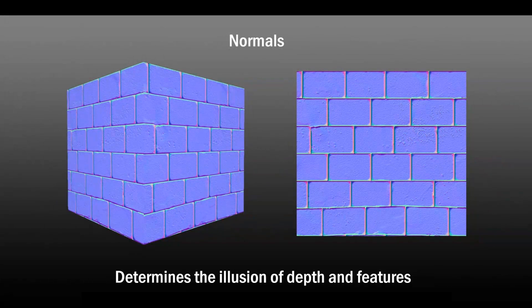Another extremely important map used today is Normal Mapping. Normal Mapping essentially determines the illusion of depth and features. Technically, it tells the computer which direction light needs to be bounced off the object without having geometry — there are no polygons there, but this map tells the computer how to behave as if those polygons were there.